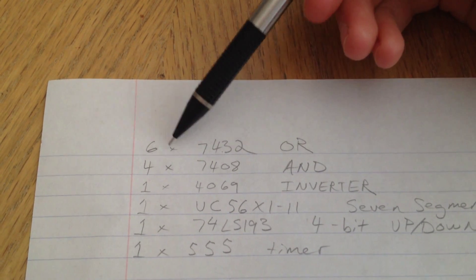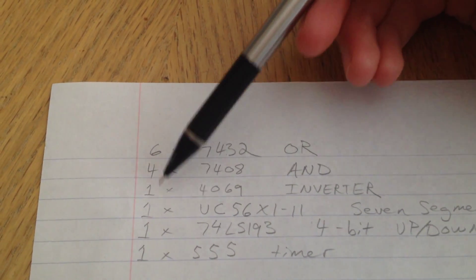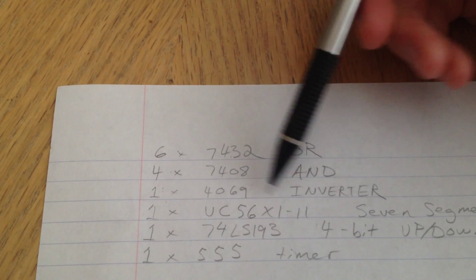Those are fundamental gates. And I needed six of the OR, four of the AND, and one inverter. Right here. The 4069.